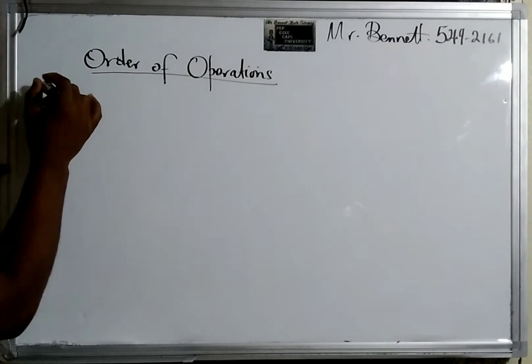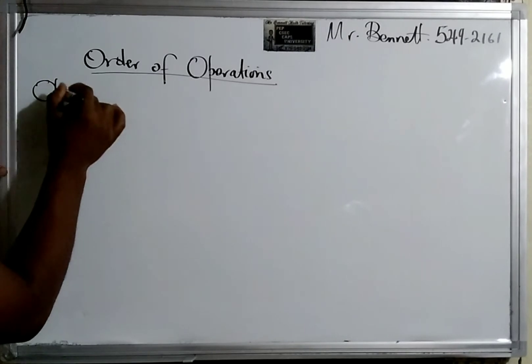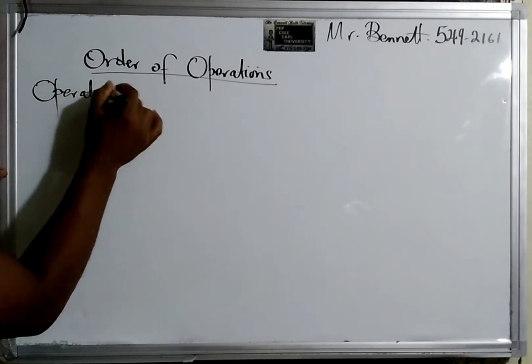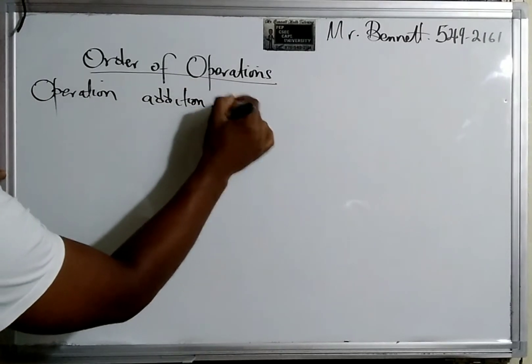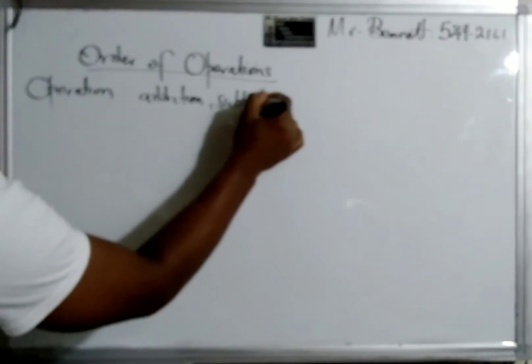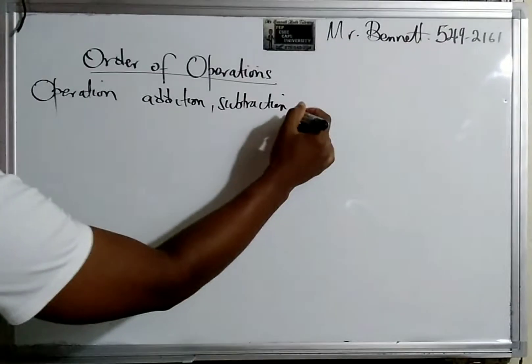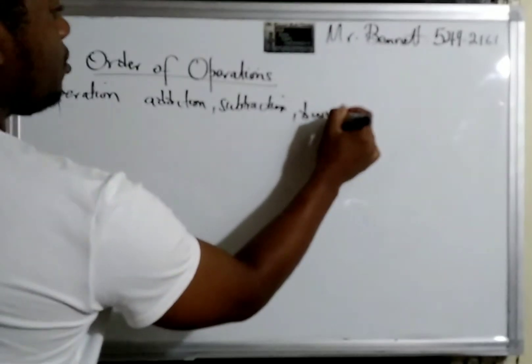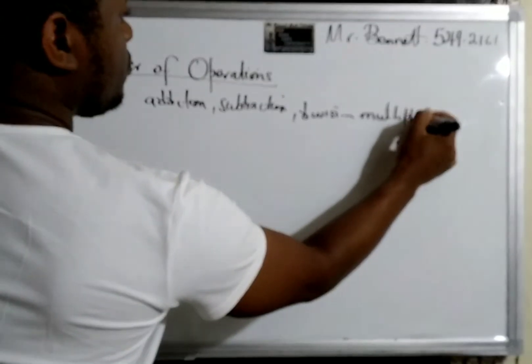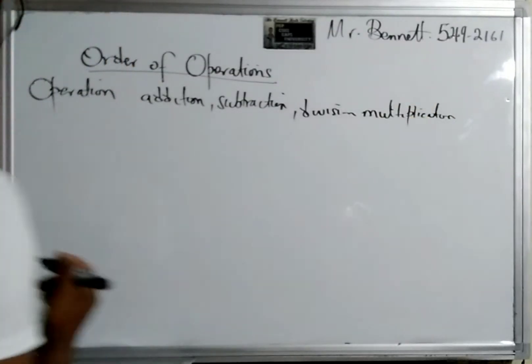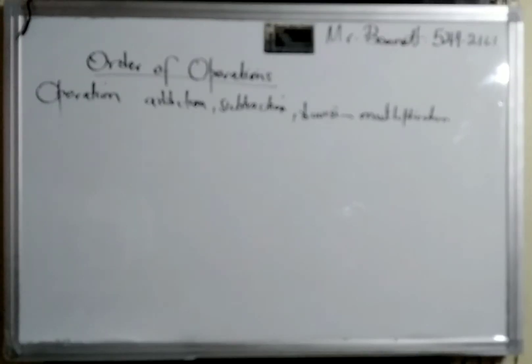...are basically these: addition, subtraction, division, multiplication. So basically these are four main types of operations, right? However, we have a special order in which we do...